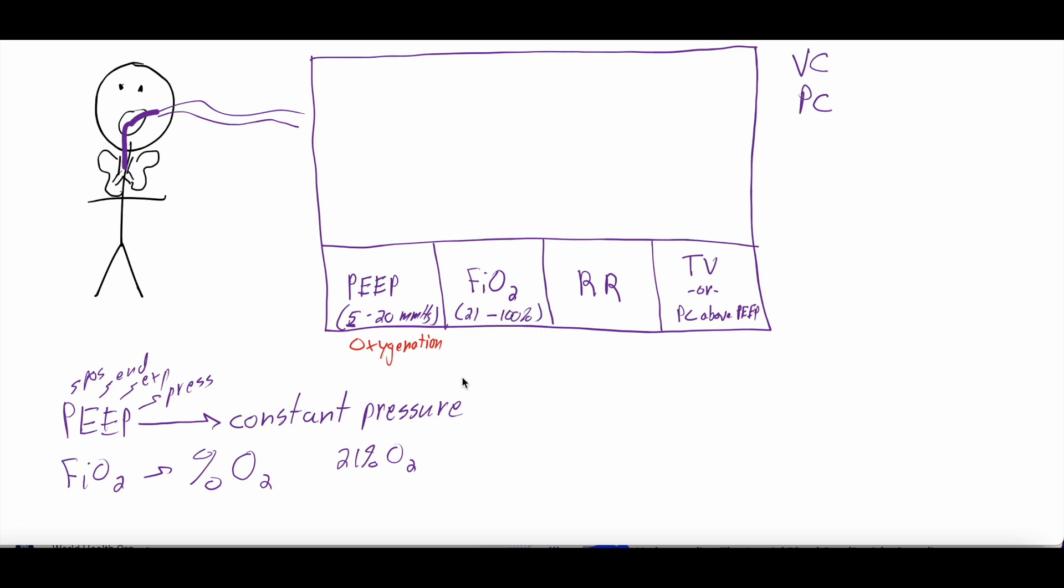So on the ventilator, we can set the oxygen anywhere from 21 to 100%. Because 21 is just atmospheric oxygen. Many people don't go less than 40%, but you can. There's no reason you can't. I traditionally have not seen anyone go less than 30%, but you theoretically could go all the way down to 21% or atmospheric oxygen. And this also helps with oxygenation. If you are hypoxic or have low oxygen levels and you have to go on a ventilator, we can increase the amount of oxygen you're getting with each breath all the way to 100%, up from 21%, which is what you're breathing on room air.